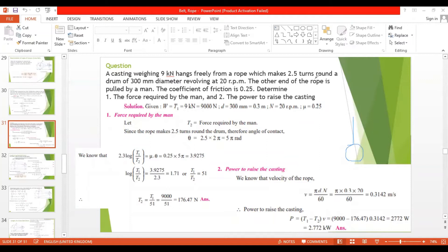From a rope which makes 2.5 turns around the drum. So there's a drum - we can consider it as a pulley. This rope makes 2.5 turns: one turn, two turns, and a half turn. 2.5 turns around the drum of 300 millimeter.